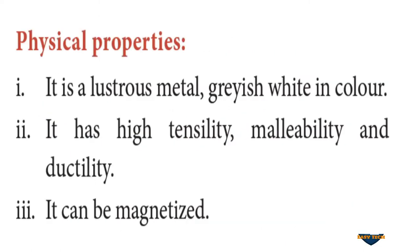Now the physical properties of iron: it is a lustrous metal that can be polished, and it is greyish white in colour. It has high tensility, malleability, and ductility — it can be made into sheets and wires — and it can also be magnetized.